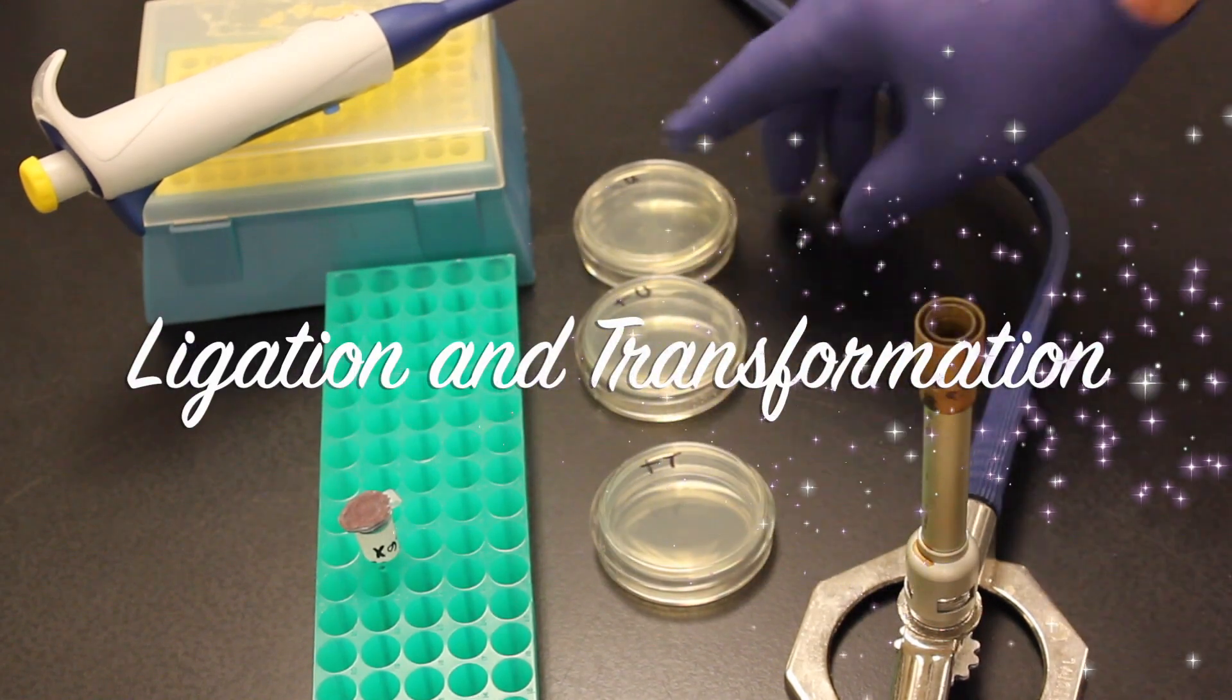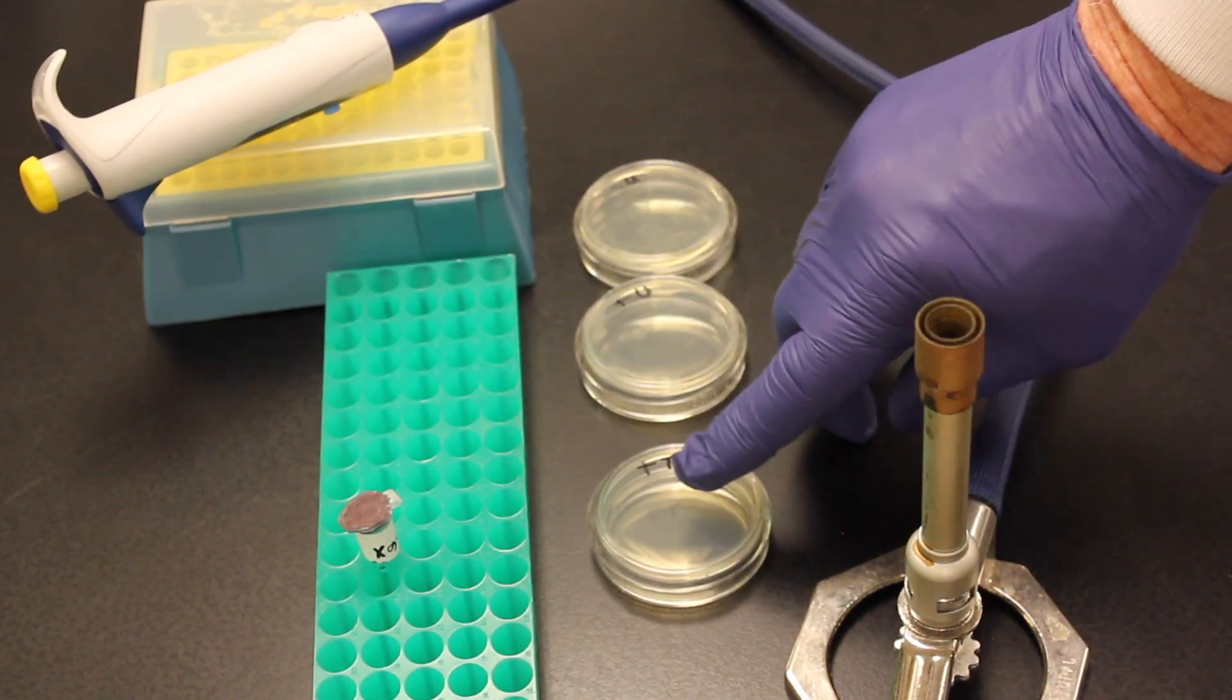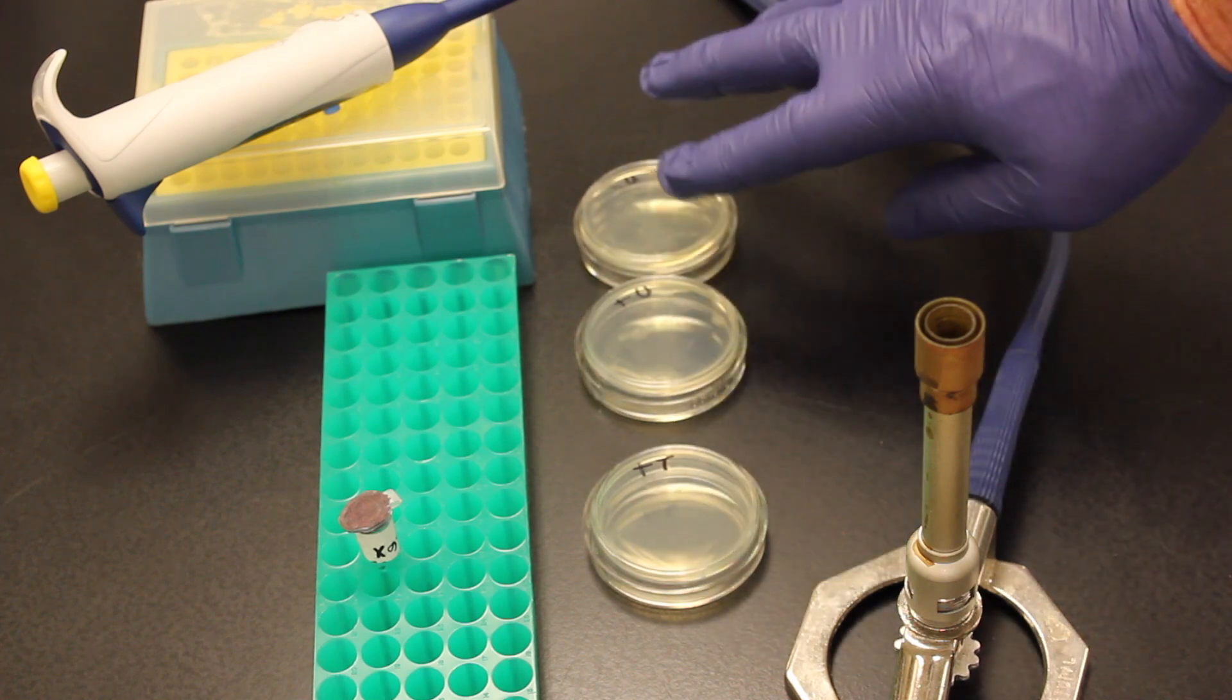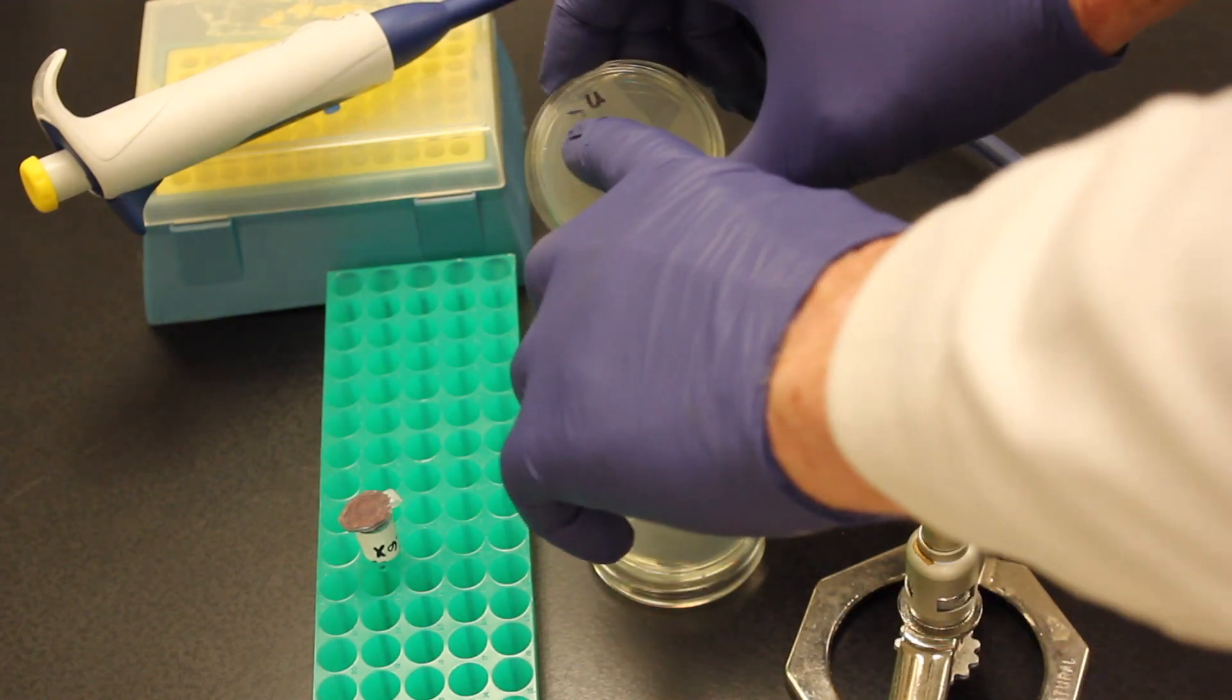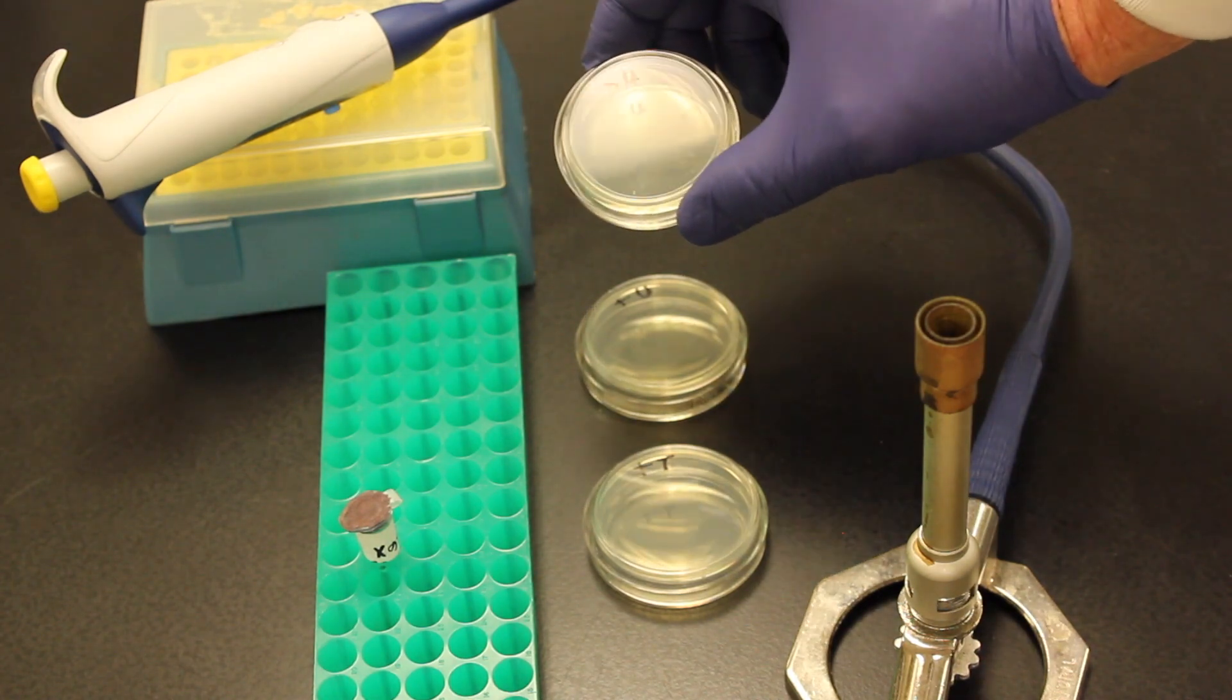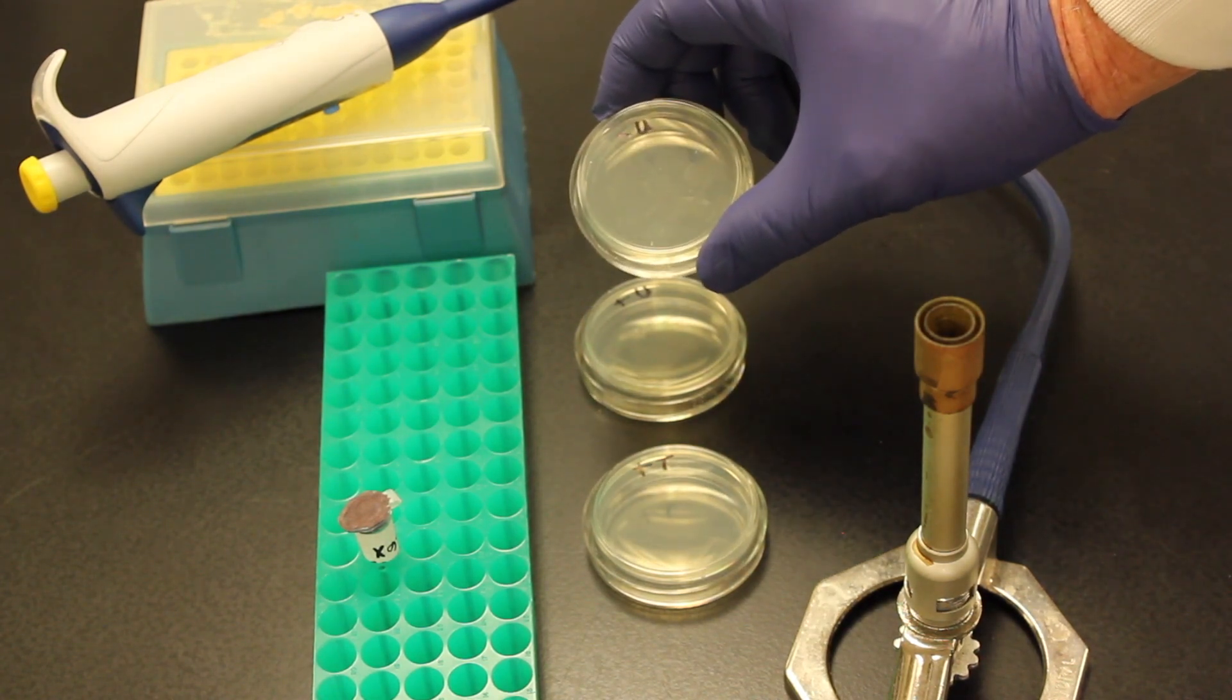All right, so now I have three plates here that I want to add X-Gal to one of these three plates. Here I have a plate with a minus, meaning it has no ampicillin, the antibiotic ampicillin.